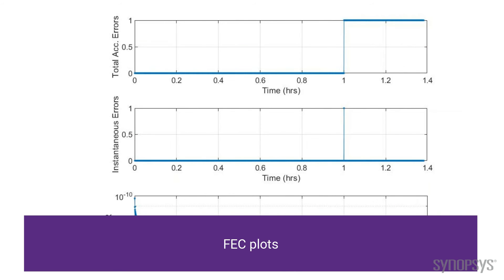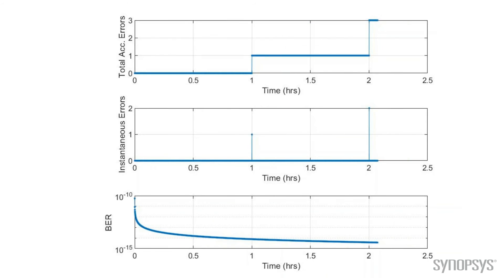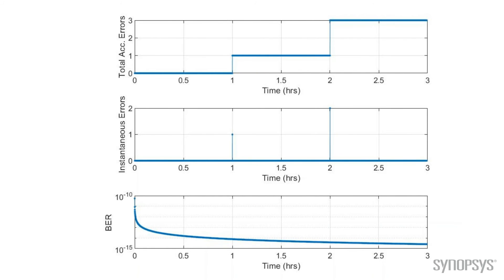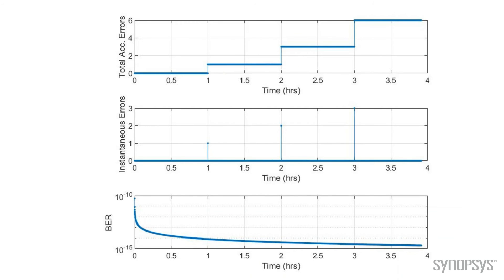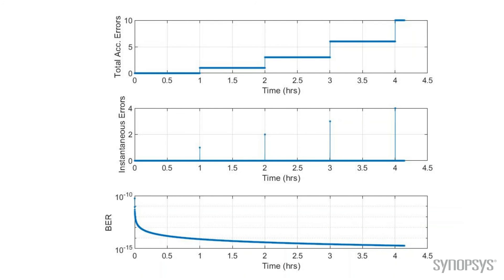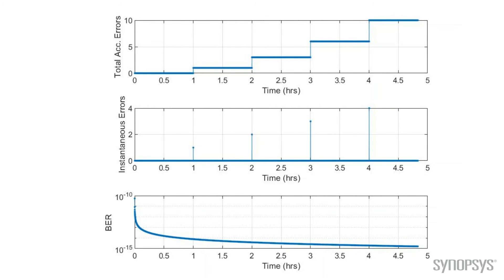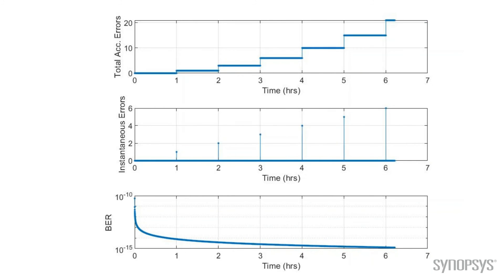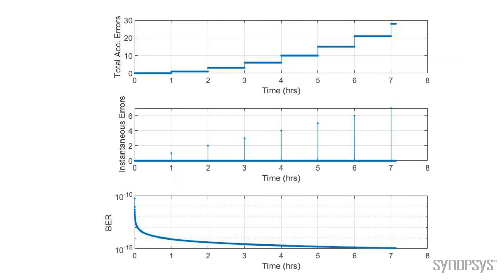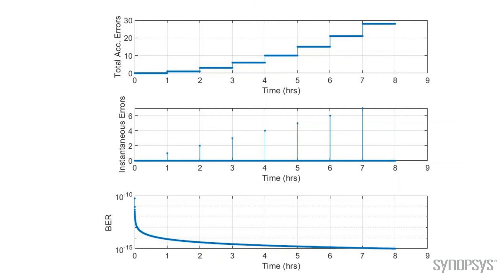Now we'll take a look at the forward error correction plot. The middle plot captures instantaneous errors, and the top plot captures accumulated errors after running overnight. As shown in the bottom plot, the post-forward-error-correction bit error rate is 1E-50.